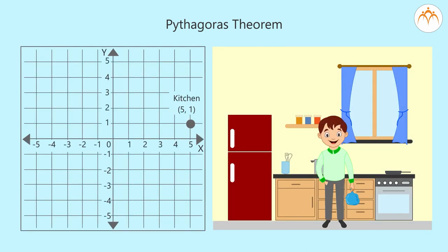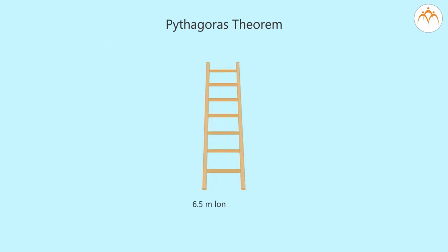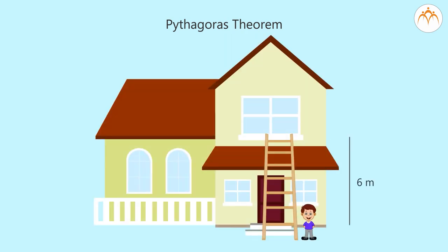Jeevan takes the waste from the kitchen and goes to the garden and puts it in the pit. How much distance he walks between kitchen to garden pit? There is a 6.5 meter long ladder. Mahesh puts ladder at the window bottom 6 meter above the ground. How much away from the wall is the ladder on the ground?